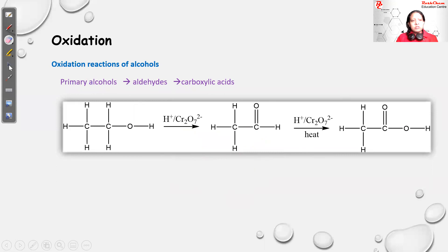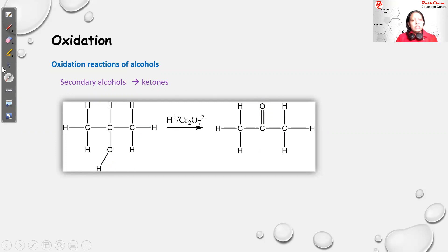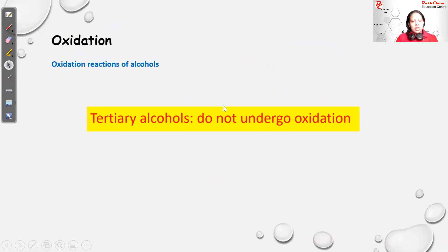Secondary alcohols can also undergo oxidation, but the product is a ketone. For example, propan-2-ol (a secondary alcohol) oxidized with dichromate or permanganate gives a ketone — the OH on the second carbon becomes C=O. Tertiary alcohols, however, cannot be oxidized using oxidants such as dichromate or permanganate because they are resistant to oxidation.